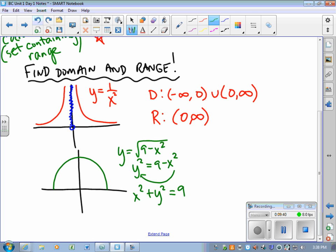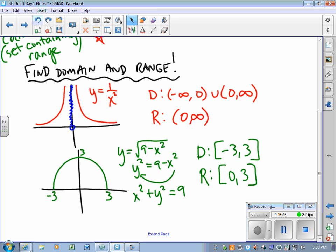Since it's the top half of the circle centered at the origin with radius three, this runs from negative three to three—that's three up top. The domain runs from negative three to three. Remember, the square brackets indicate that negative three and three are included. The range runs from zero to three. Excellent.